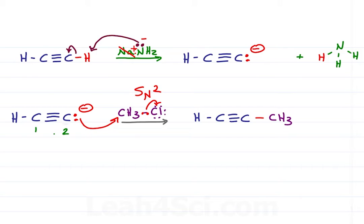And look at that. We started with two carbon atoms, and we ended with three for an ideal chain elongation.